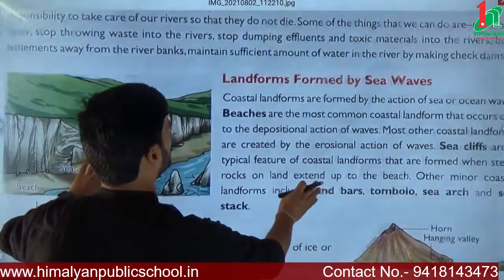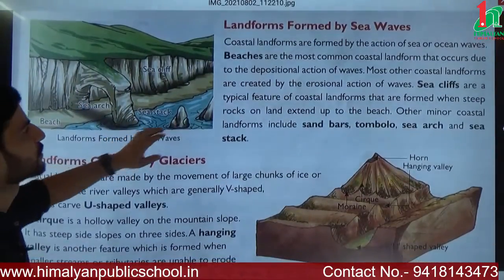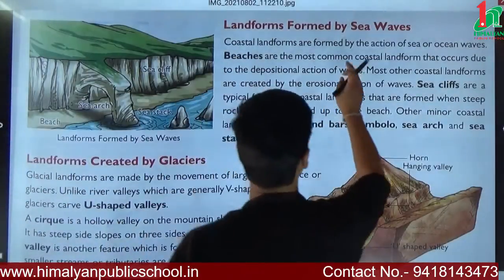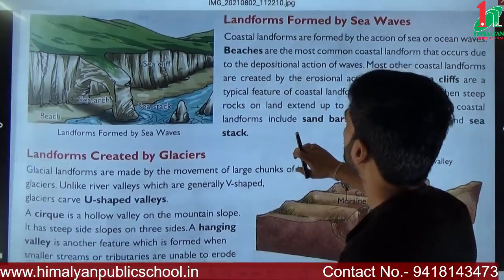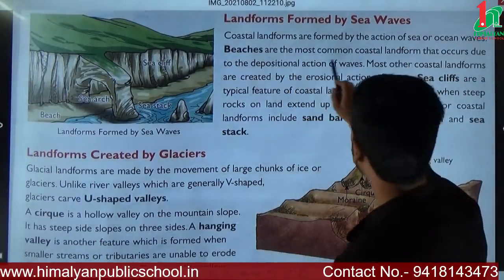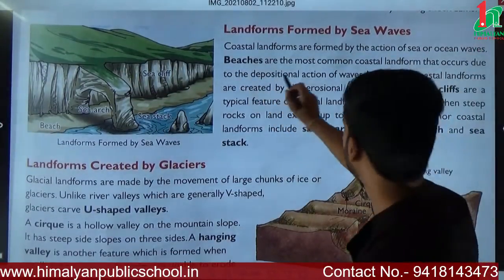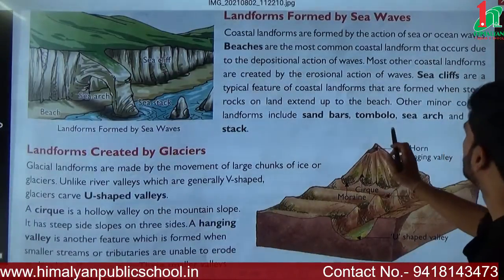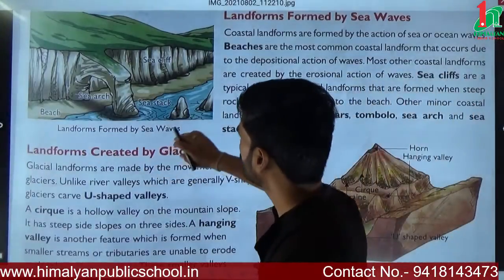Now let's discuss the second agent: sea waves. Coastal landforms are formed by the action of sea or ocean waves. The beaches are the most common coastal landforms. Sea waves also create sea cliffs, sand bars, tombolo, sea arc, and sea stacks. These are the different landforms which sea waves create.